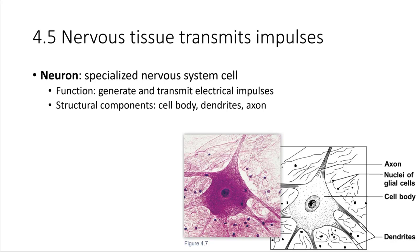A neuron is a very specialized cell. What it does is it receives and sends electrical impulses. What do we mean by an electrical impulse? Essentially this just means ions move — ions moving across the cell membrane allow these cells to send signals.